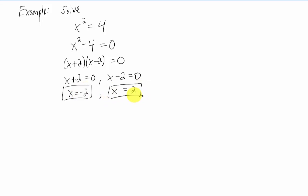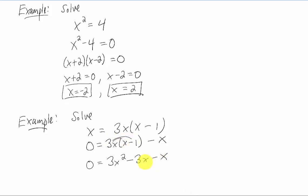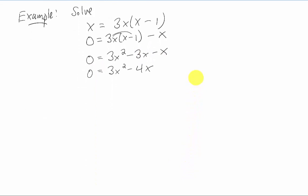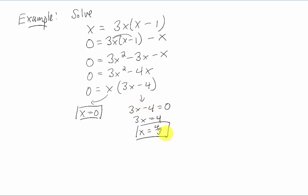This is a good reminder that we are only solving equations using factoring in this video. We'll do one more example. We subtract x from both sides to get zero on one side, then multiply out the three x through the parentheses and combine like terms. Now we can factor out just an x. We have two factors multiplied by one another set equal to zero: x and three x minus four. The first factor gives x equals zero directly. For the second, add four to both sides then divide by three to get x equals four thirds. Both x equals zero and x equals four thirds solve the original equation.